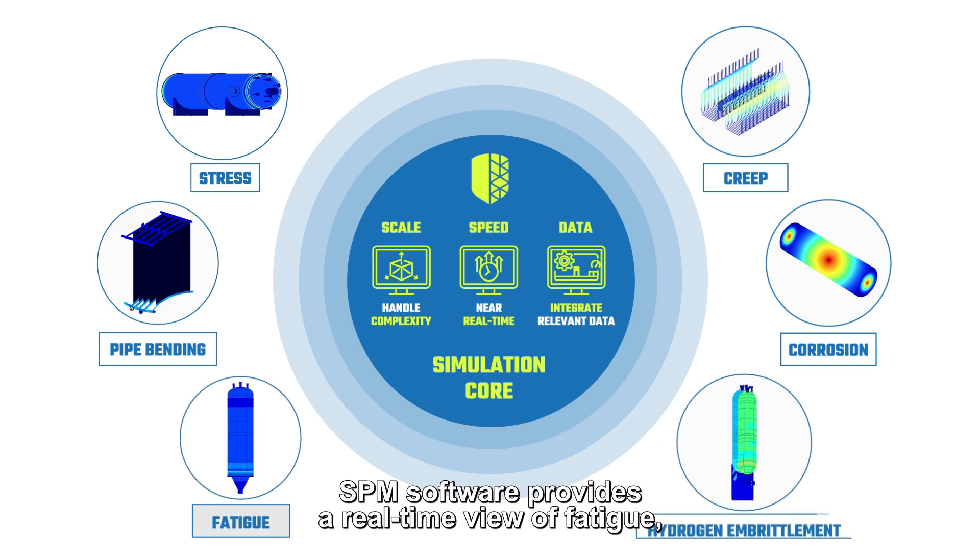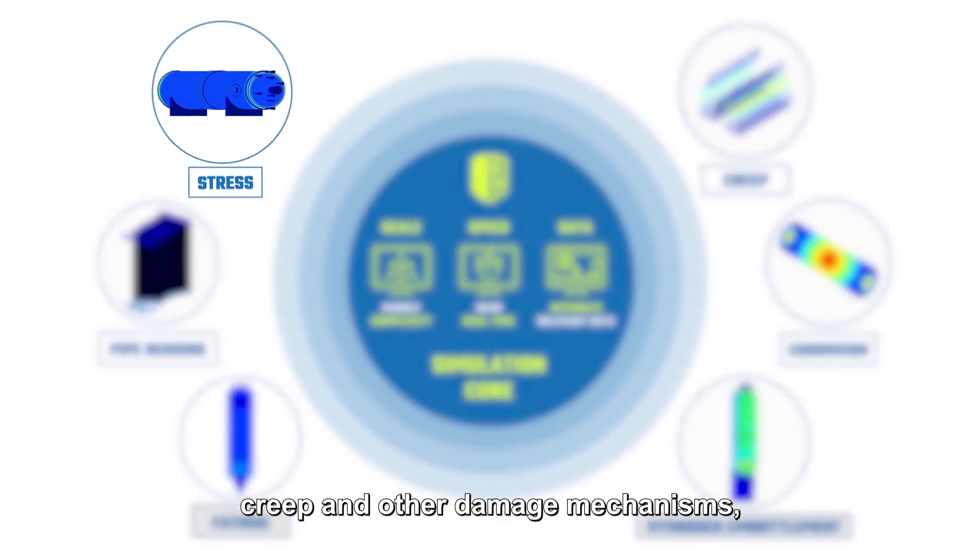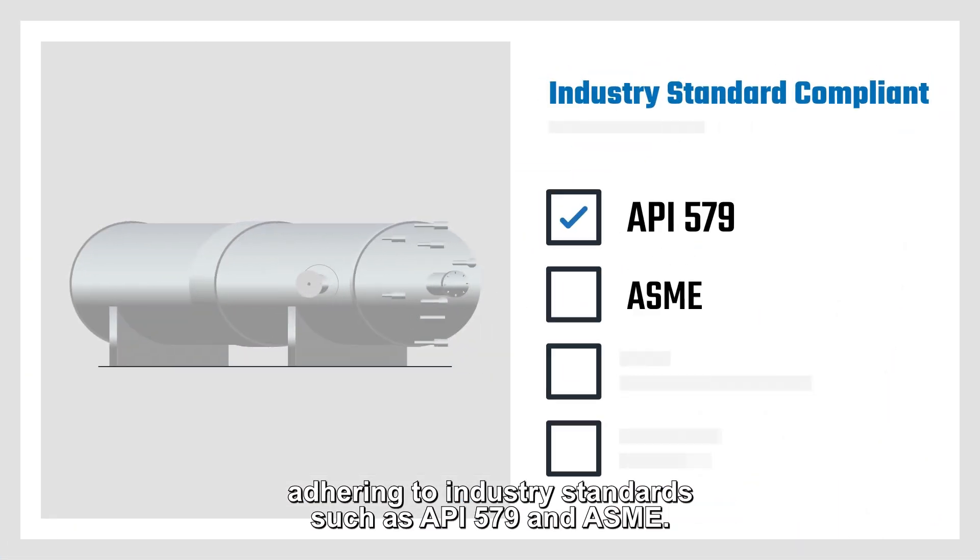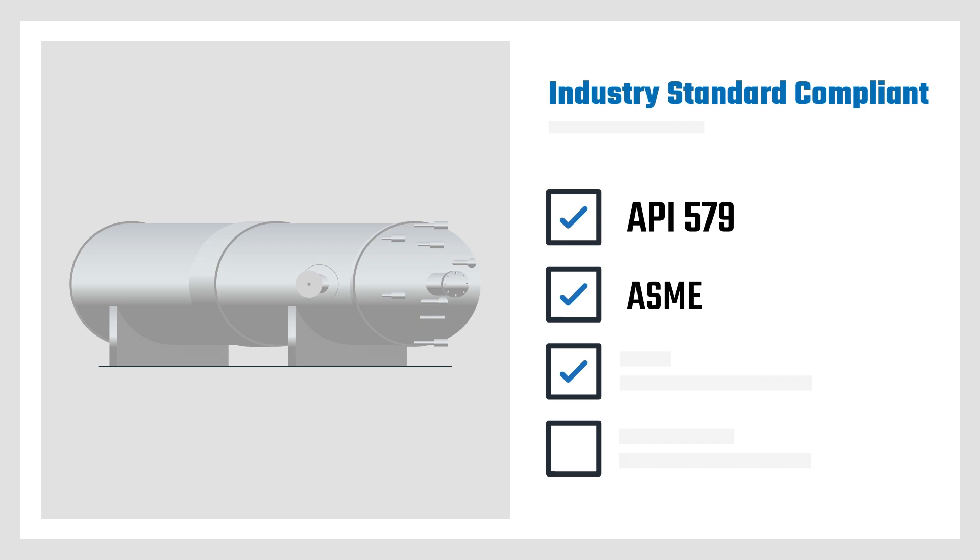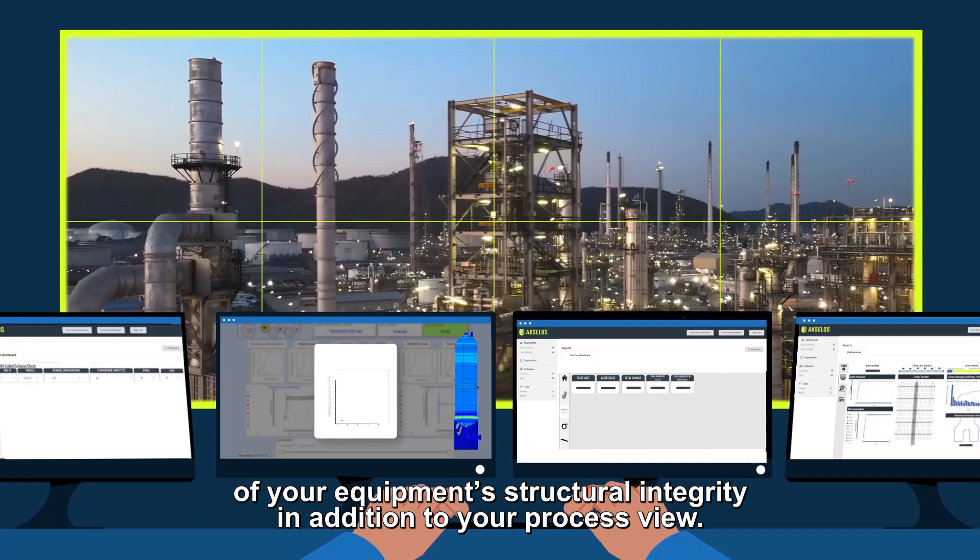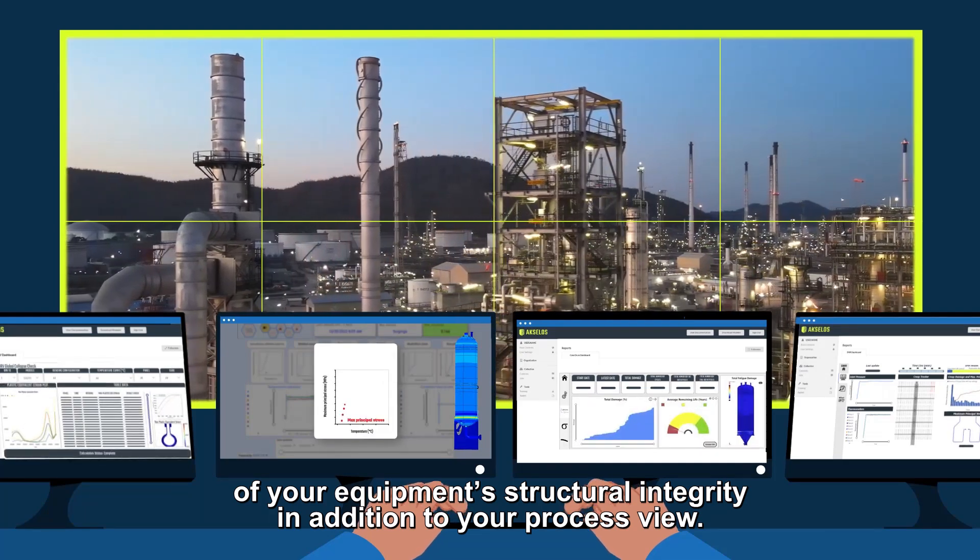SPM software provides a real-time view of fatigue, creep, and other damage mechanisms adhering to industry standards such as API 579 and ASME. As an operator, SPM software enables you with a real-time view of your equipment's structural integrity in addition to your process view.